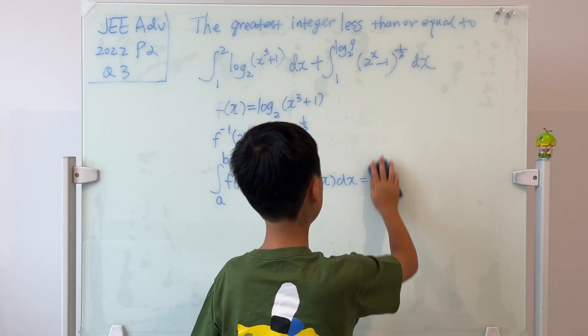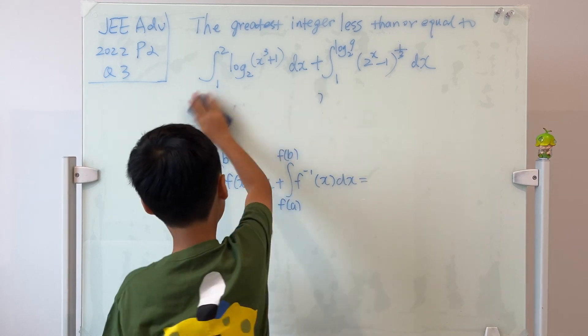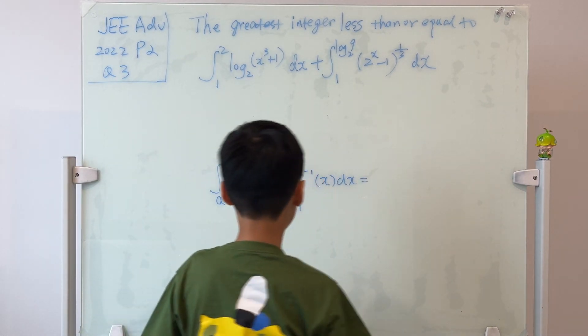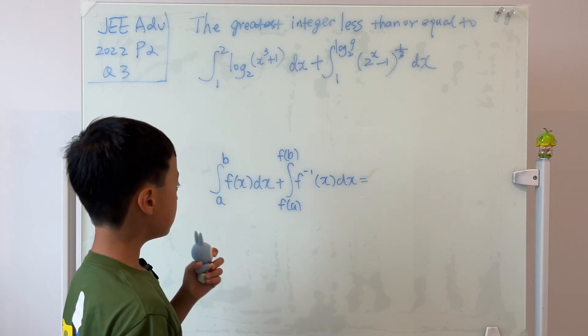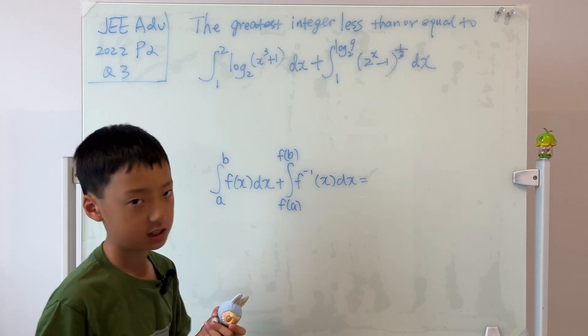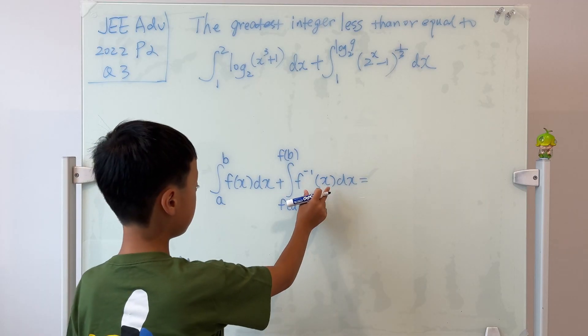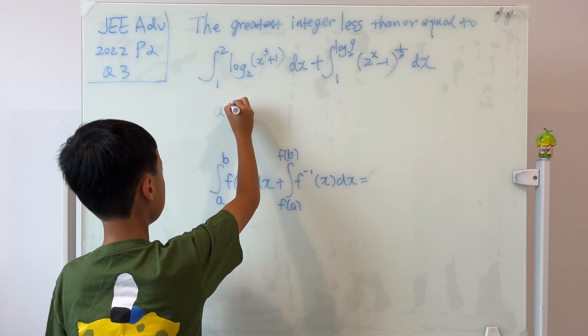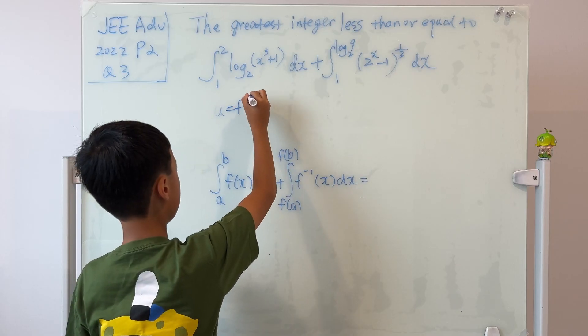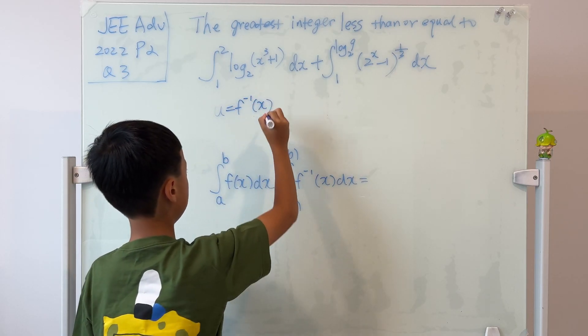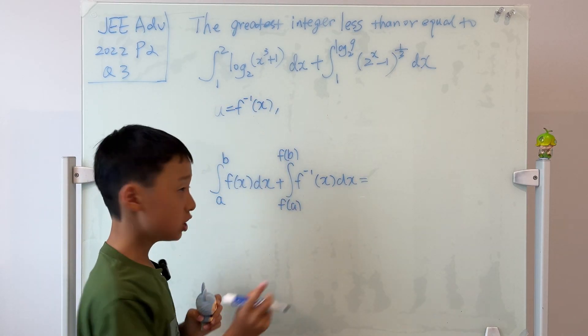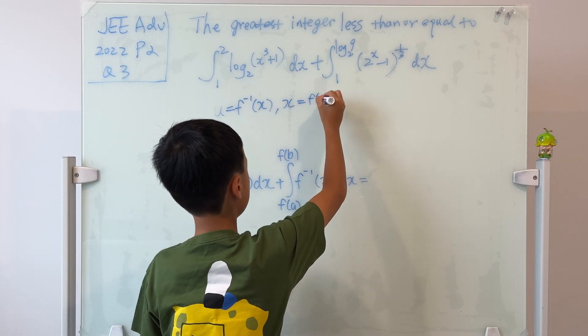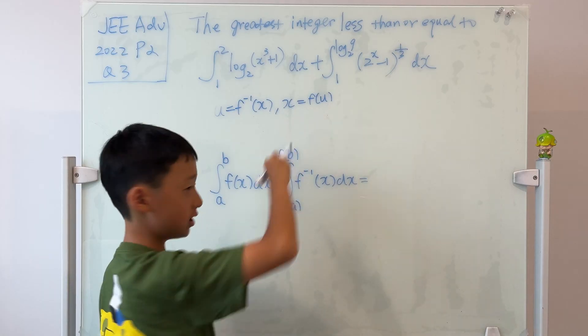We pretend that we don't know this. Why don't we just try a simple u substitution and see what happens. If we do a u sub on this, then we let u be f inverse of x. So by definition, we know that x is equal to f(u). Because this is the definition of inverse functions.